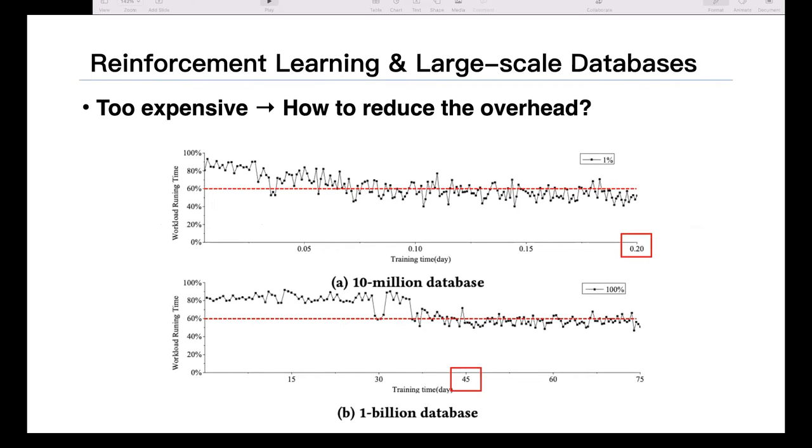We plotted two exemplary demonstrations for the workload running time. On top, we have a 10 million entries database, and on the bottom, we have a 1 billion entries database. We can see that the running time of 1 billion database takes 45 days and nobody can wait that long. So the core problem behind this paper is: for large scale databases, when we want to achieve full autonomy using reinforcement learning, how can we reduce this overhead?